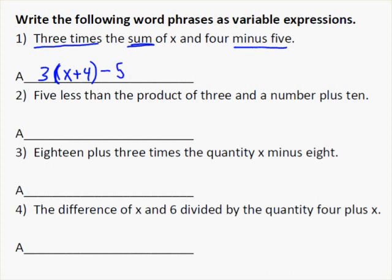Number 2 says 5 less than. 5 less than means you're going to do minus 5 at the end. What's it less than? It's less than a product, and the product is 3 and a number. The number we're just going to call x, so you have 3x minus 5. Then at the end, you can't forget that it also asks you to add 10, so you end up with 5 less than 3x, and then you add 10 at the end.